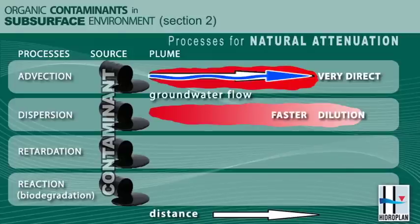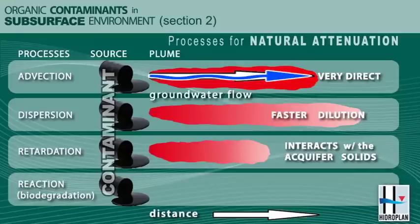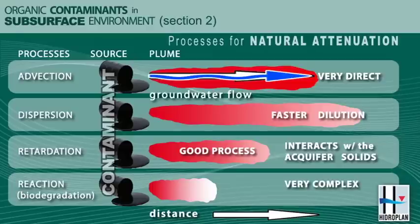The whole front of the plume is actually fairly diluted, so dispersion has this dilution effect, but it can also advance contaminant migration. The third process is retardation — whereby the contaminant interacts with the aquifer solids, resides on the aquifer solids for some period of time, and then comes back into solution and is transported along. It's a process that slows down the contaminant and is generally viewed as beneficial. The last process is reaction, which is very complex. We'll touch upon it and give some examples, but it's really site-specific and may require expertise beyond what we currently have.